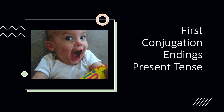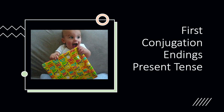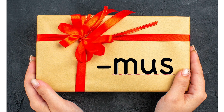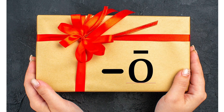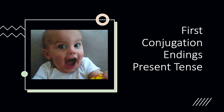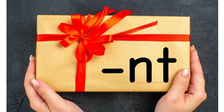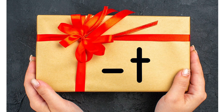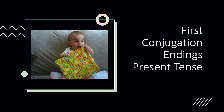First conjugation present tense: O, S, T — mus, is, unt. O, S, T — mus, is, unt. O, S, T — mus, is, unt. First conjugation present tense.